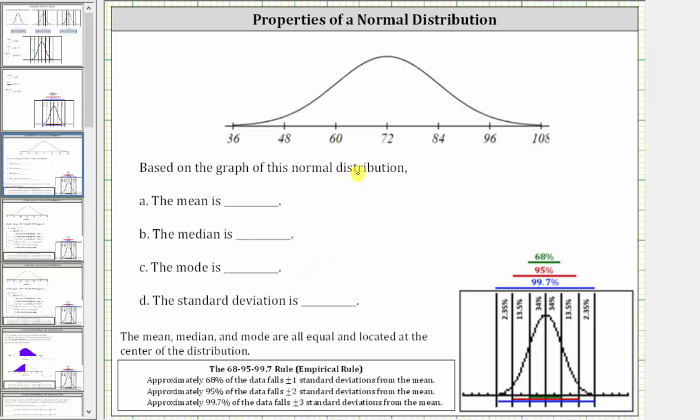One of the properties of the normal distribution is that the mean, median, and mode are all equal and located at the center of the distribution. So notice 72 is at the center of the distribution, and therefore 72 is the mean, median, and mode.